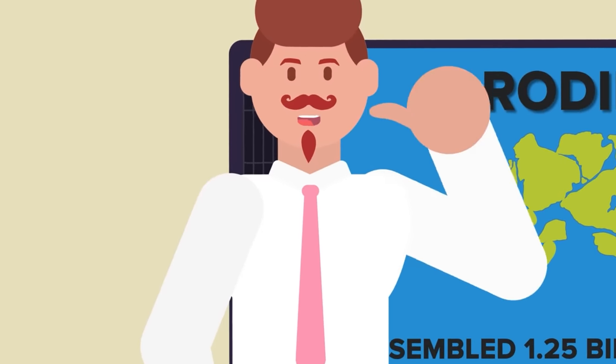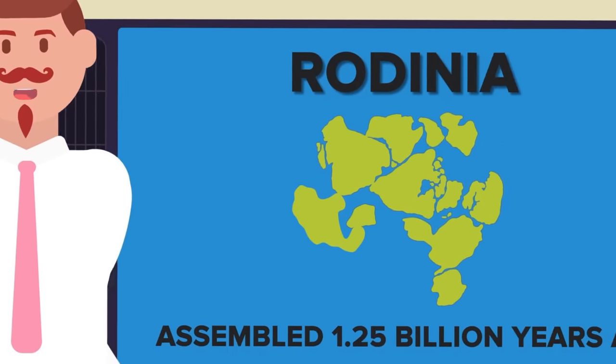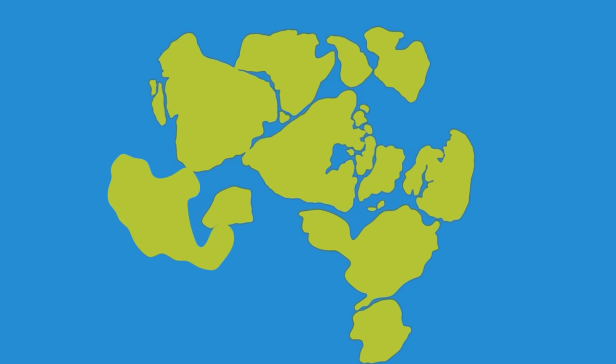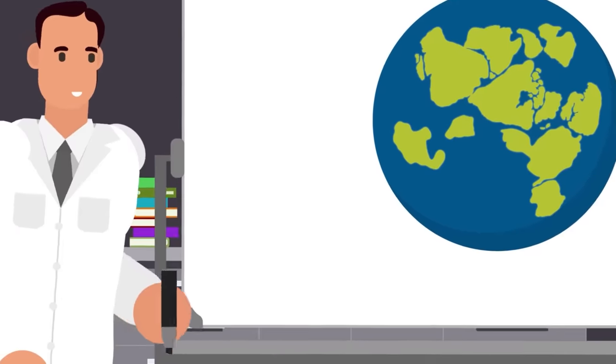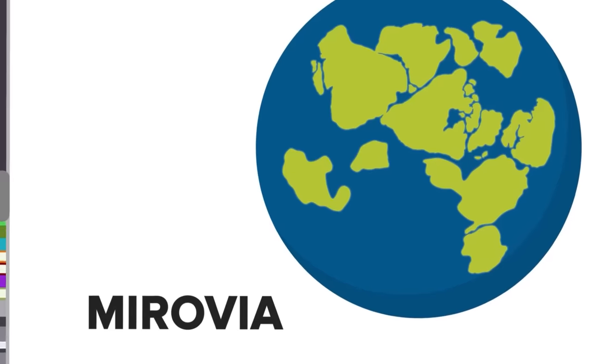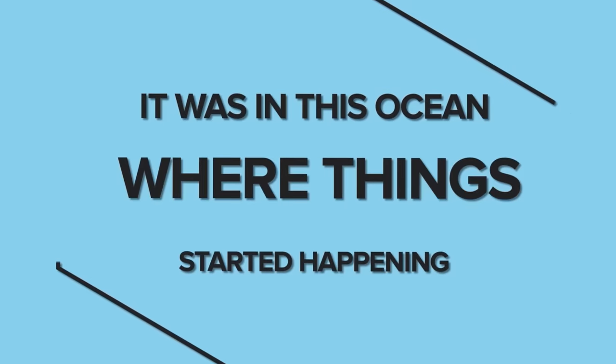That assembled 1.25 billion years ago and continued accumulating land mass for almost half a billion years. This was part of the process that began when a previous supercontinent broke up, and it's believed that this was a relatively unstable continent, with the connections between many fragments being tenuous at best. This is the earliest supercontinent that we have concrete reconstructions of, and it was surrounded by a super ocean named Mirovia. And it was in this ocean where things started to happen.